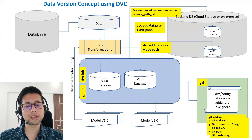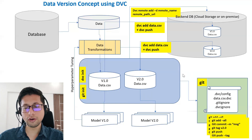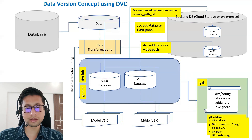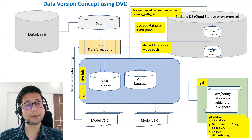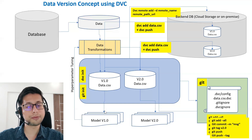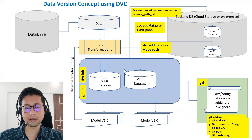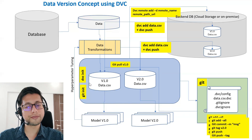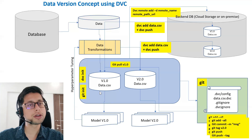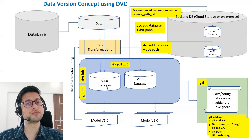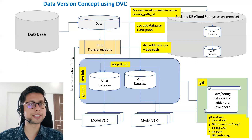Now version 2.0 is maintained in the backend DB. Suppose model version 2.0 is not giving enough performance and version 1.0 was the optimal one. To reproduce version 1.0 you need the corresponding data used for it. You can run git pull version 1.0 — providing the tag information — and in your current working directory you will now have the reference file for the previous version of data. Then you can run dvc pull and easily reproduce the previous experiment.